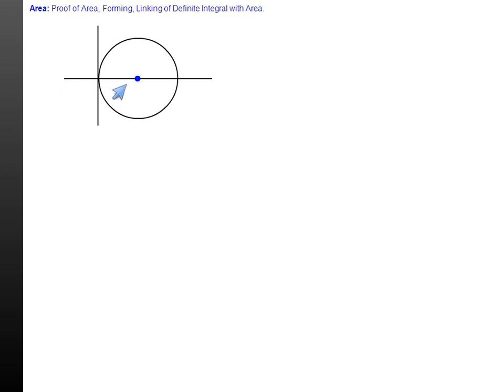Suppose this is the circle x minus 1 whole square plus y square equals 1. Now this is the point 0, this is 2, 0. So if we calculate the area from here to here then because of symmetry the area will be 2 times integral 0 to 2 f(x) dx.